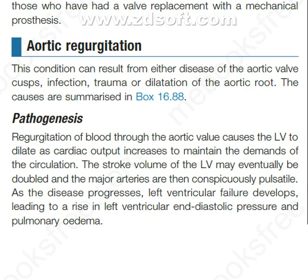Pathogenesis. Regurgitation of blood through the aortic valve causes the left ventricle to dilate as cardiac output increases to maintain the demands of the circulation. The stroke volume of the left ventricle may eventually be doubled and the major arteries are then conspicuously pulsatile. As the disease progresses, left ventricular failure develops, leading to a rise in left ventricular end-diastolic pressure and pulmonary edema.